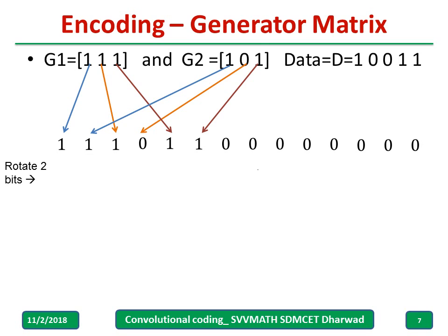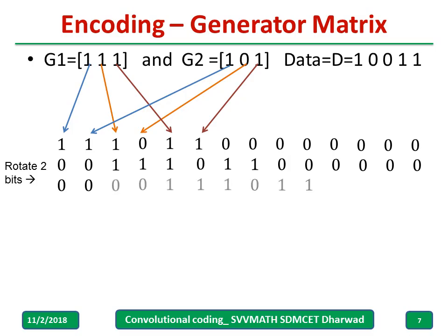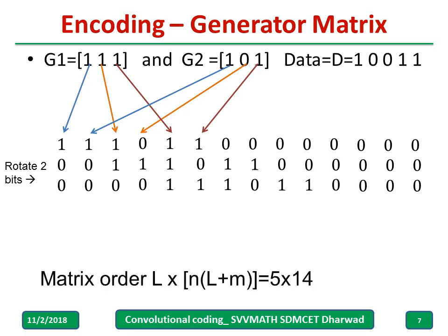Next, rotate 2 bits. When rotating 2 bits, you get two zeros followed by the rest as is. Rotate again by 2 bits. The reason we rotate 2 bits is because we have G1 and G2 in this case. If you have G1, G2, G3, rotate 3 bits; if G1, G2, G3, G4, rotate 4 bits — that is the general rule.